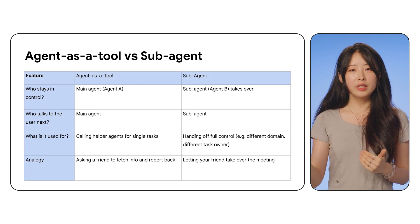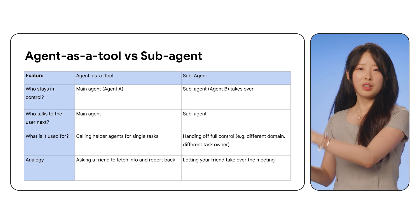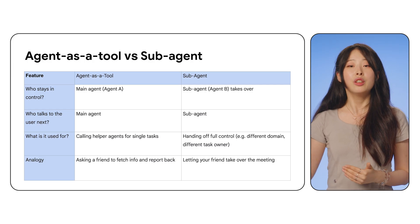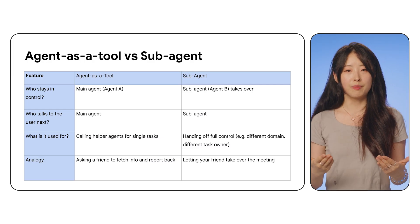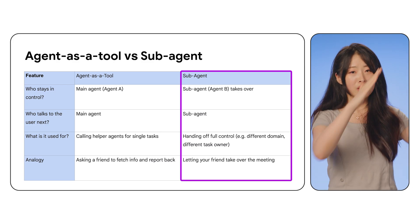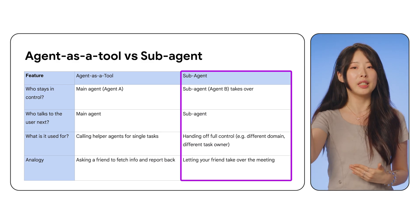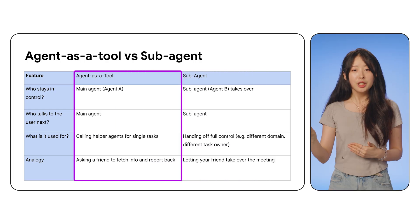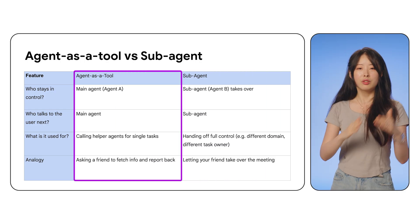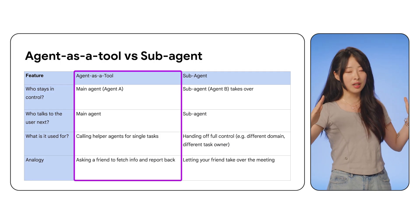You may wonder: what is the real difference between agent as a tool and a sub-agent? In the diagram on the screen, you can see the difference between them. To summarize: a sub-agent is part of an organizational chart and is always managed by its parent agent. An agent as a tool is like bringing in a consultant — you call them when you need it, but they're not part of your core hierarchy.